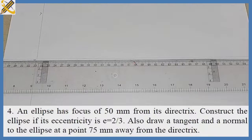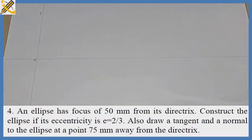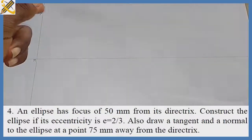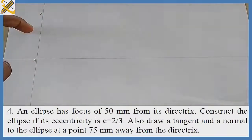Good day. Today's construction class we will be looking into the construction of an ellipse using the eccentricity method. I'm going to make use of the parameters on the screen. The focus of our ellipse from the directrice is 50 millimeters. The first thing I'm going to do is produce this horizontal line, then this vertical line perpendicular to it. This line here is my directrice D-D.